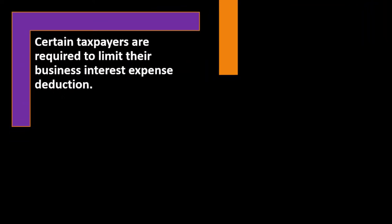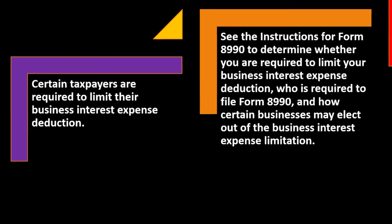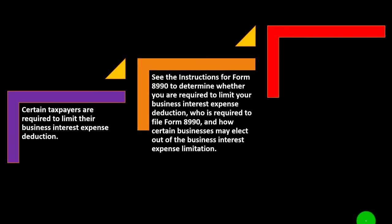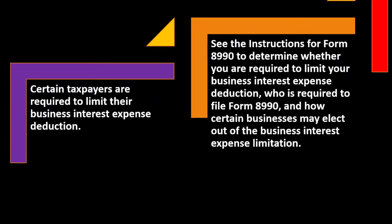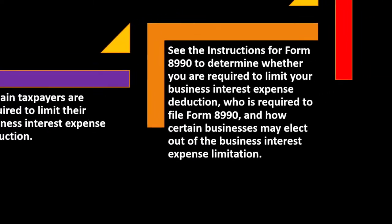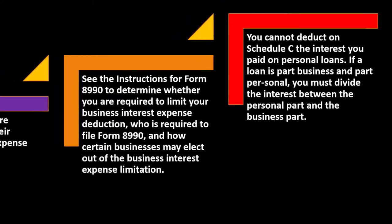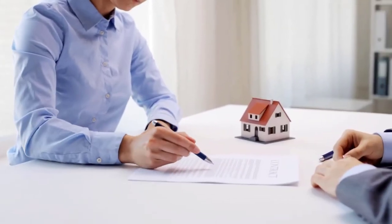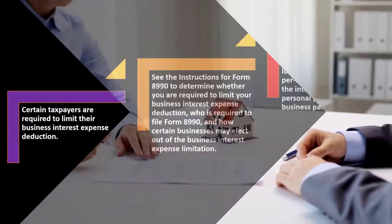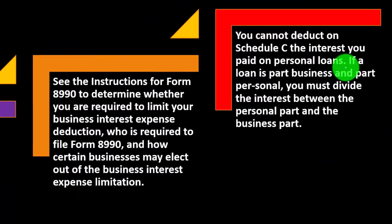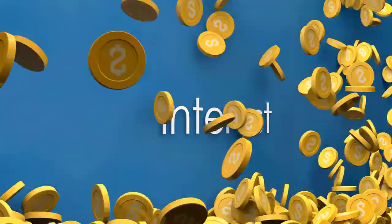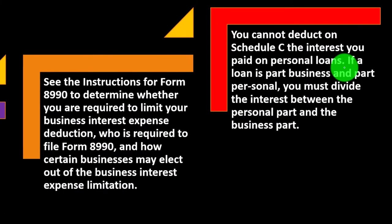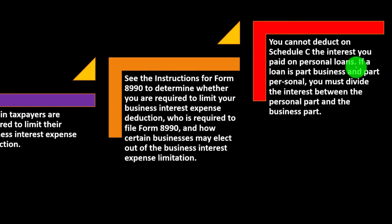Certain taxpayers are required to limit their business interest expense deduction. See the instructions for Form 8990 to determine whether you are required to limit your business interest expense deduction, who must file Form 8990, and how certain businesses may elect out of the limitation. You cannot deduct on Schedule C the interest you paid on personal loans — credit card debt, for example. The mortgage on your home may be deductible elsewhere, such as Schedule A, but not Schedule C. Interest on a personal car loan is also not deductible, as it is not a business loan.